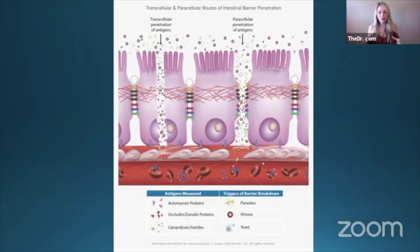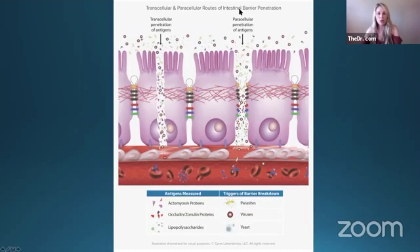This is a really great slide from Cyrex that I love to use to explain intestinal pathogenic permeability, or leaky gut as it's often called. We can develop two different types of intestinal permeability: through the cells in the gut, or between the cells in the gut.